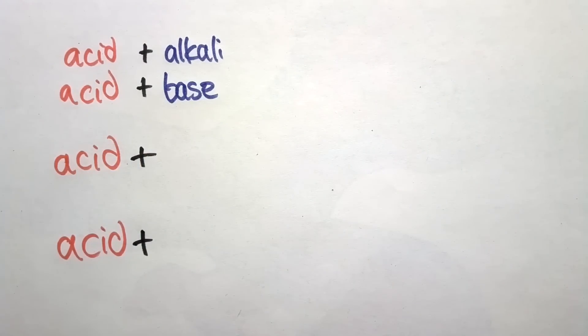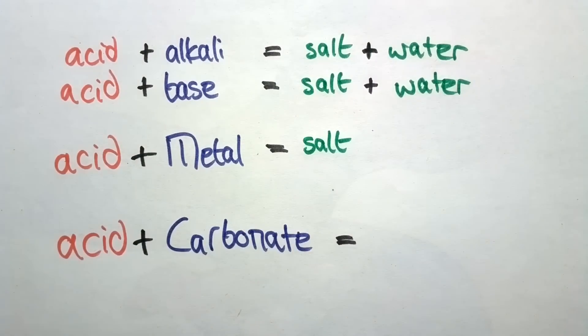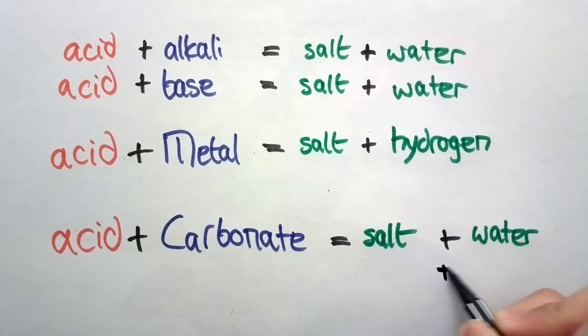There are neutralizations where acids react with a metal, which then also creates a salt, but then hydrogen instead of water. And an acid can also react with a carbonate to form salt, water, and carbon dioxide.